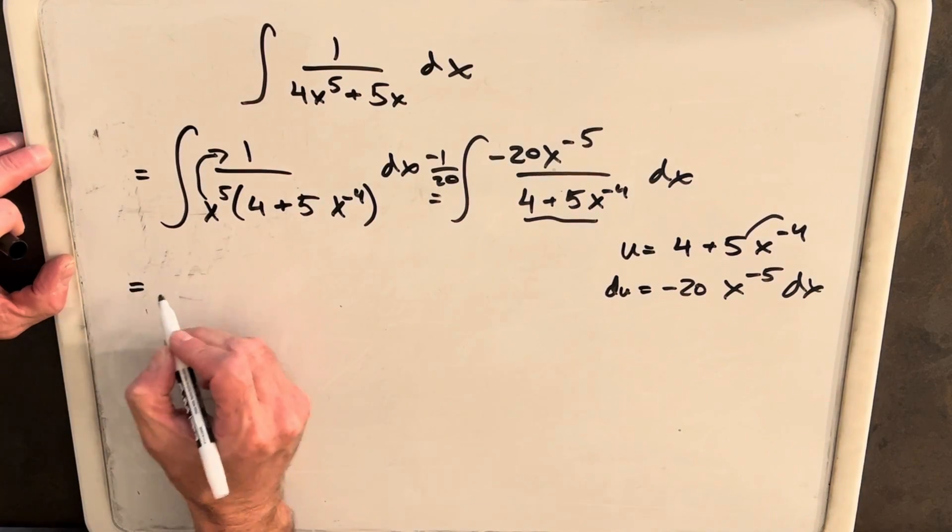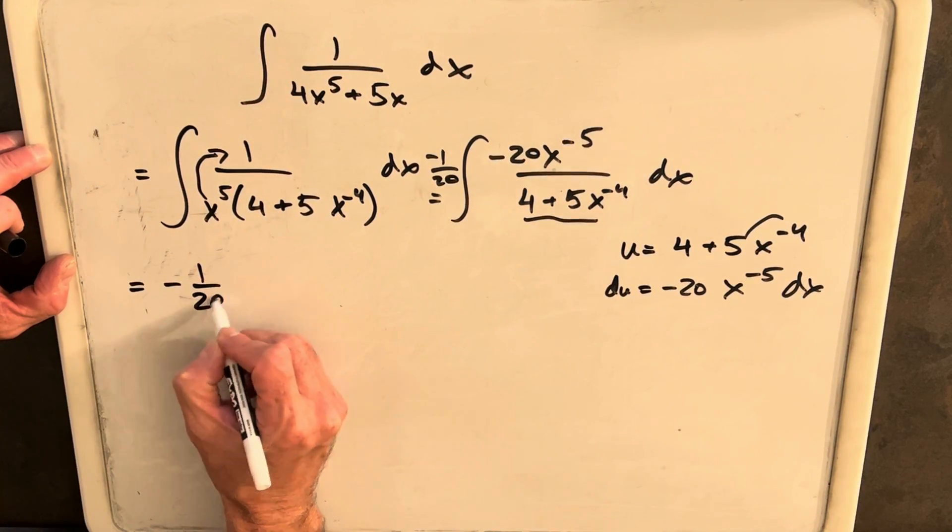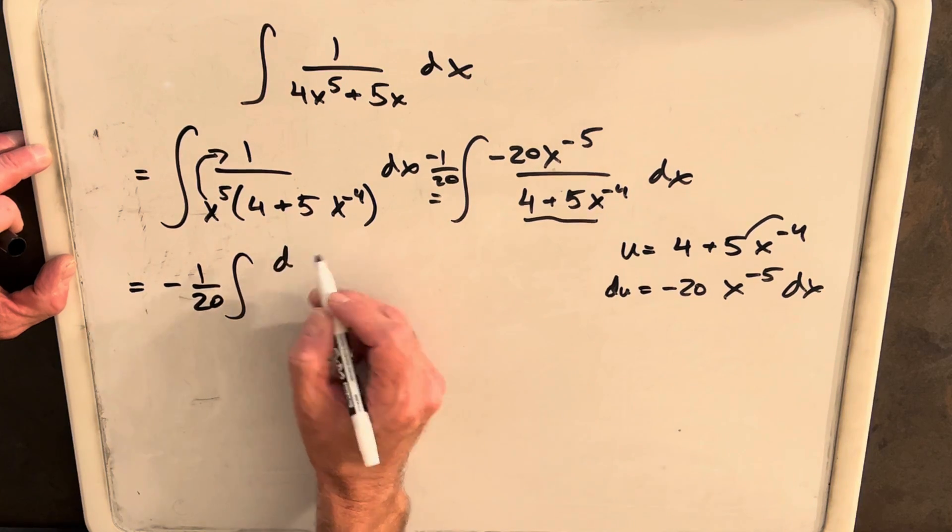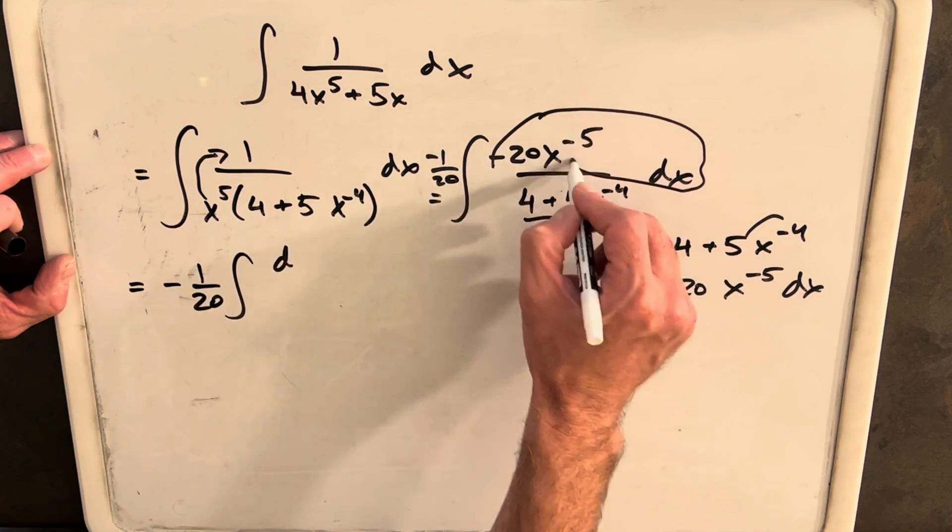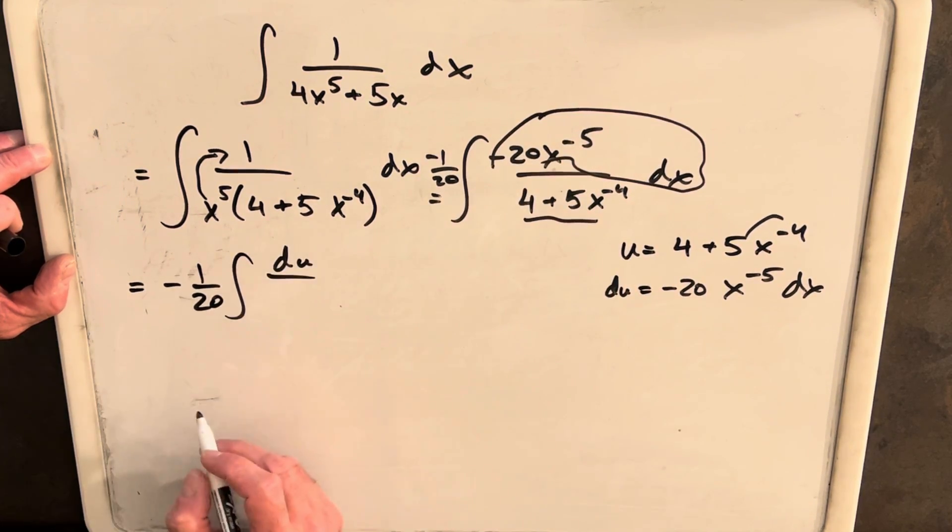Now let's do our substitution. So we're going to have minus 1 over 20 integral of, this whole thing is du. So we'll have du in the numerator and we'll have our u in the denominator.